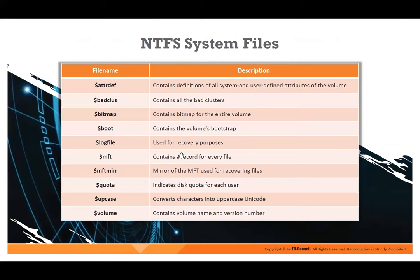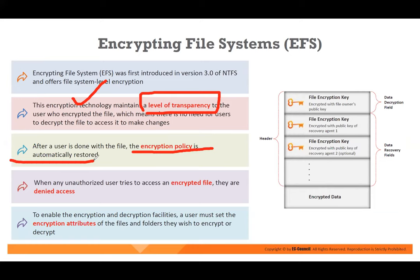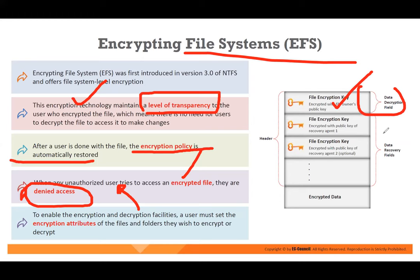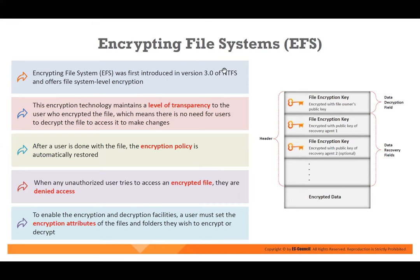NTFS supports attributes, bad clusters, bitmap, volume bootstrap, log files for recovery, and more. The third Windows file system is EFS — encrypted file system — introduced in version 3, which uses encryption technology to maintain transparency to the user. After the user is done with the file, the encryption policy is automatically restored. If an unauthorized user tries to access the encrypted file, it will deny access. An example is BitLocker. EFS contains a file encryption key, data encryption field, recovery fields, and encrypted data. So there are three Windows file systems: FAT, NTFS, and EFS.